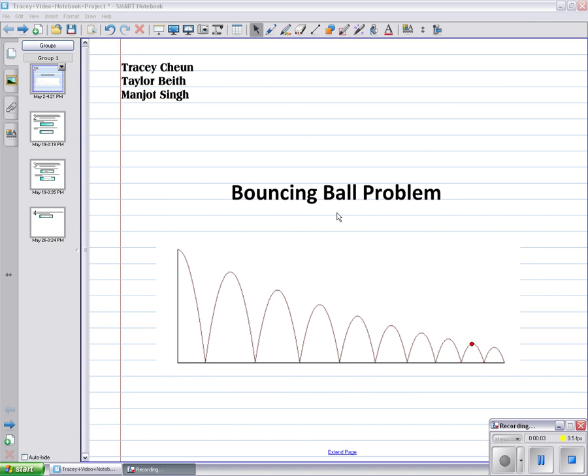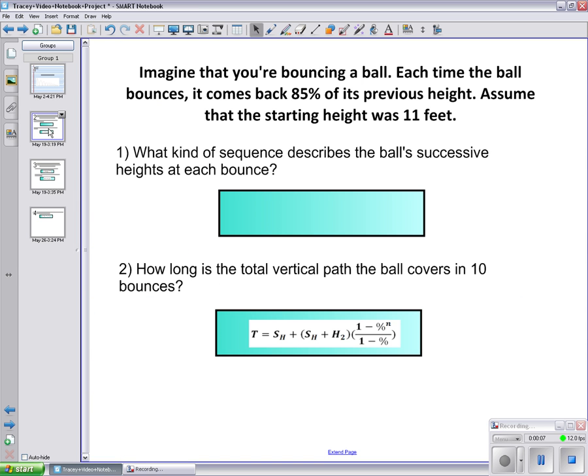Tracy Chun, Taylor Beeth, and Manjot Singh present the bouncing ball problem. Imagine that you're bouncing a ball. Each time the ball bounces, it comes back 85% of its previous height. Assume that the starting height was 11 feet.